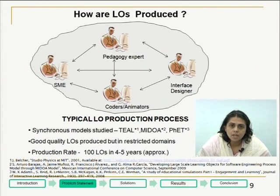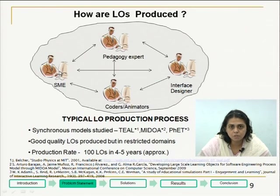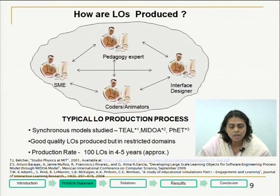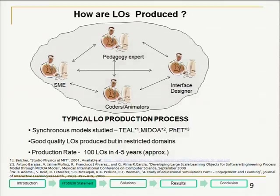How are these LOs produced? There is depth in literature containing detailed documentation of the production process. The three models which we have studied are TIL, MEDOVA, and FED because they have well-documented processes. All these adopt the synchronous model. In this synchronous model, there are four types of team members: the subject matter expert (SME), the pedagogy expert, the interface designer, and the coders or animators. The entire team is located in one place and there is extensive face-to-face communication. The result of these synchronous models are good quality LOs but produced in restricted domains like physics and physical chemistry. The production rate is around 100 LOs produced in approximately 4 to 5 years.